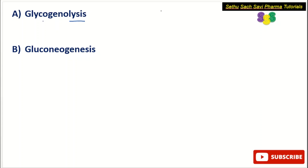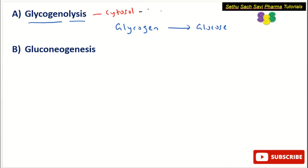Choice A: glycogenolysis. Lysis means breakdown, so glycogenolysis means the breakdown of glycogen to glucose. This process happens in the cytosol or cytoplasm, mainly in the cytoplasm of the liver and skeletal muscles.